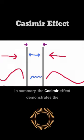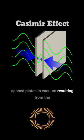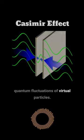In summary, the Casimir effect demonstrates the existence of a mysterious force between closely spaced plates in a vacuum, resulting from the quantum fluctuations of virtual particles.